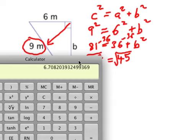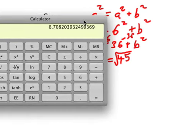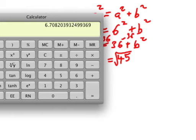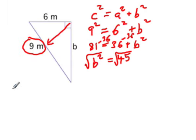And if we round to the nearest decimal point, one decimal place, it's going to be approximately 6.7 meters. Because the number after the 7 was a 0, so we keep it at 7.